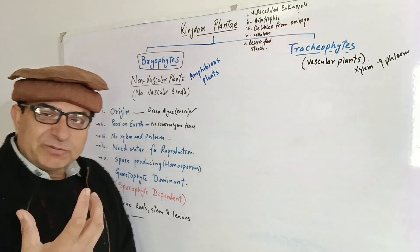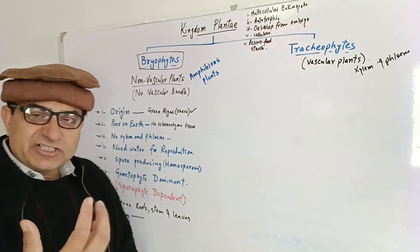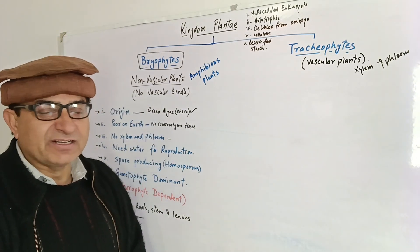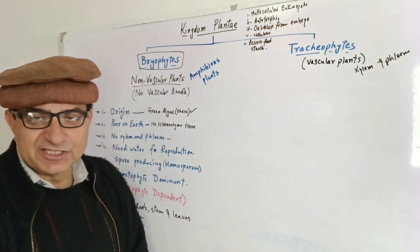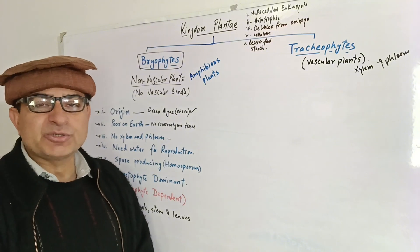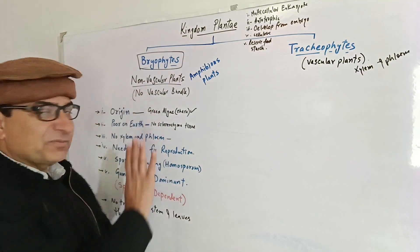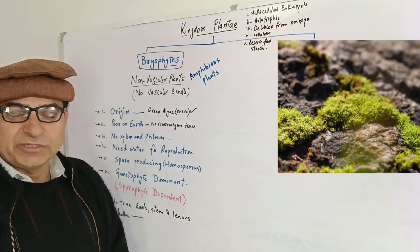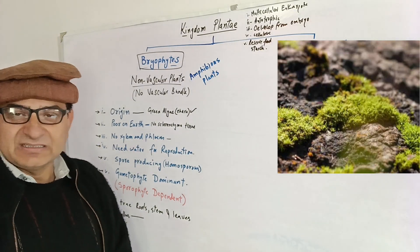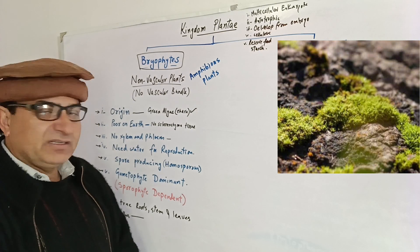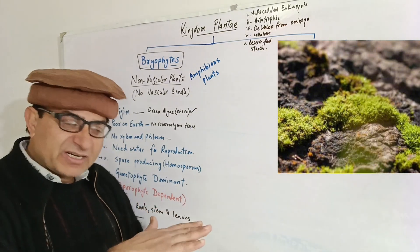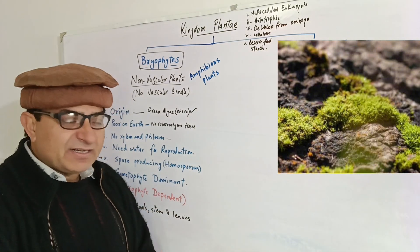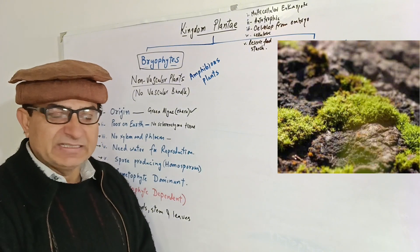Why are bryophytes poorly adapted? Because they cannot support their upright posture. Strengthening tissues are needed for that. Sclerenchyma tissues are absent in bryophytes — xylem, phloem, and fibers are absent. So these plants form a more or less velvety or carpet-like structure on the land surface.